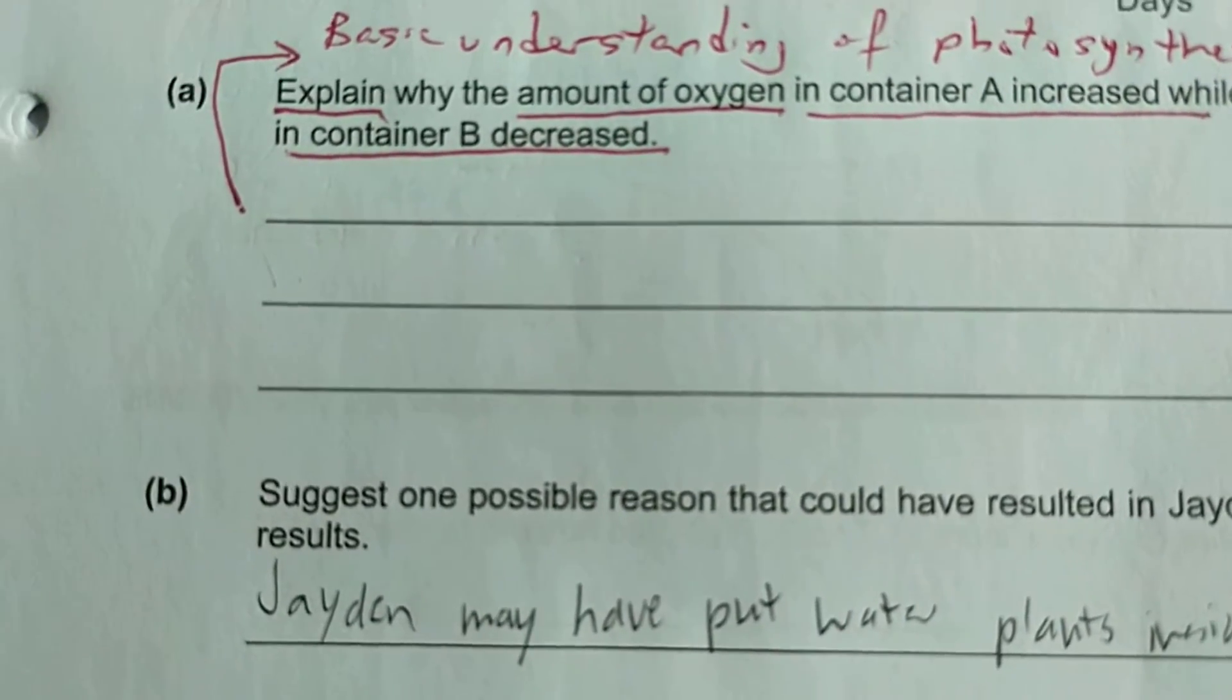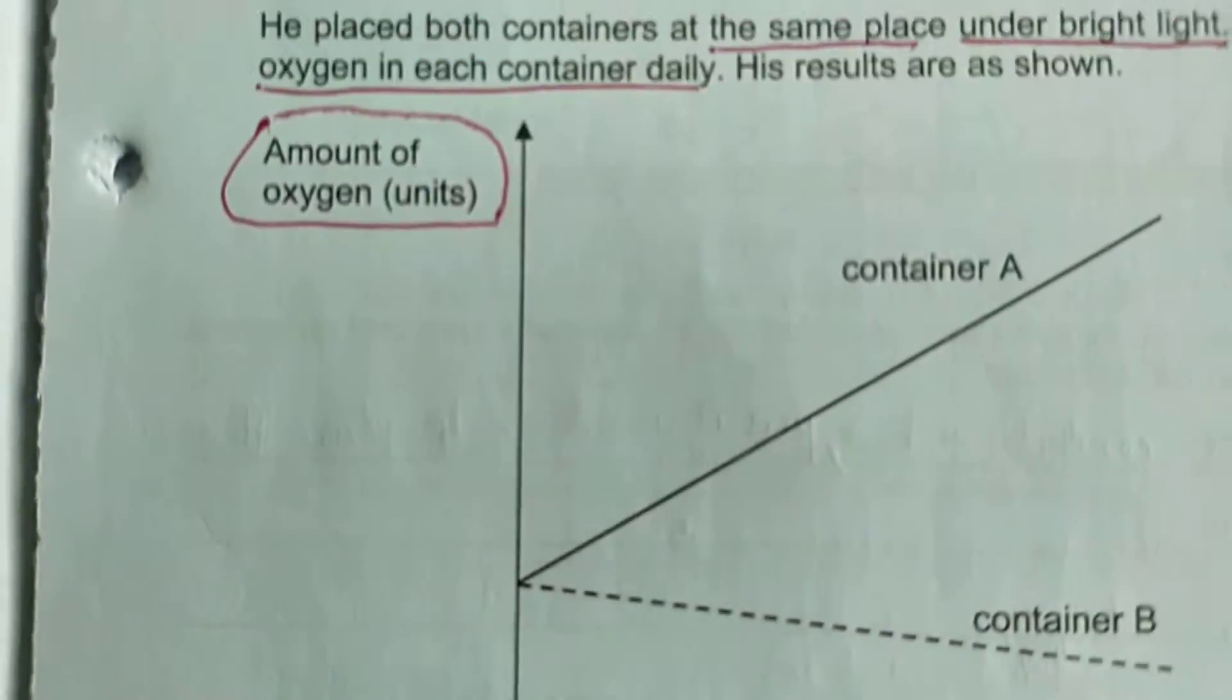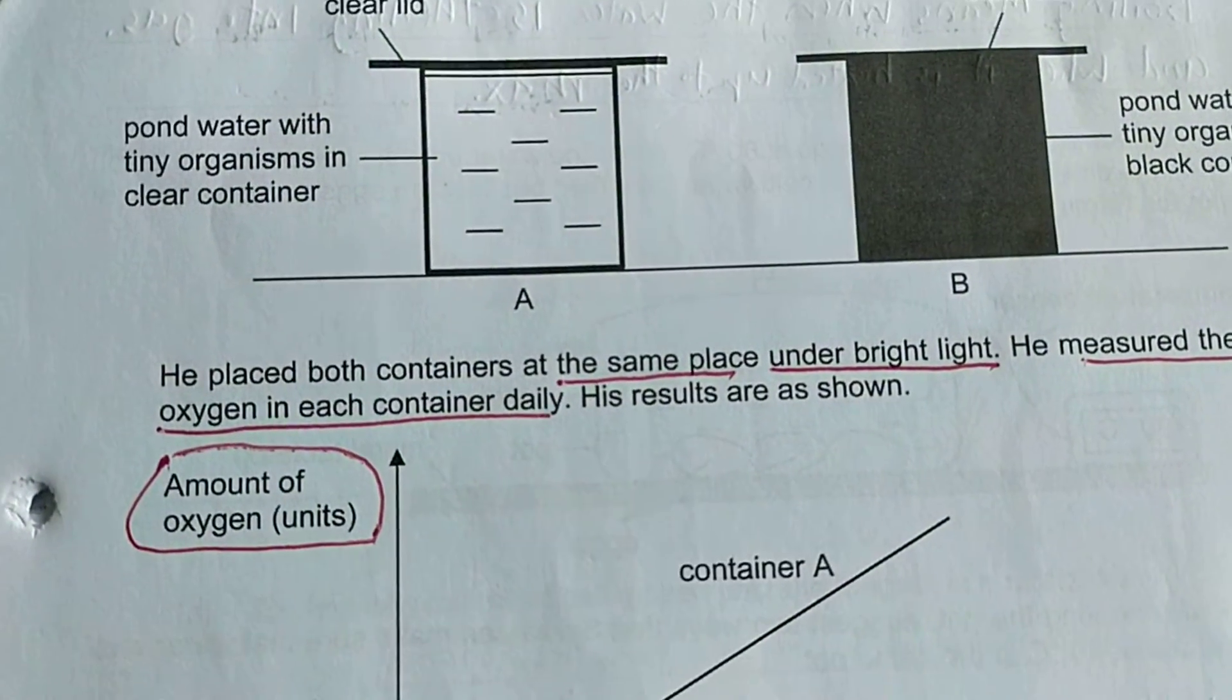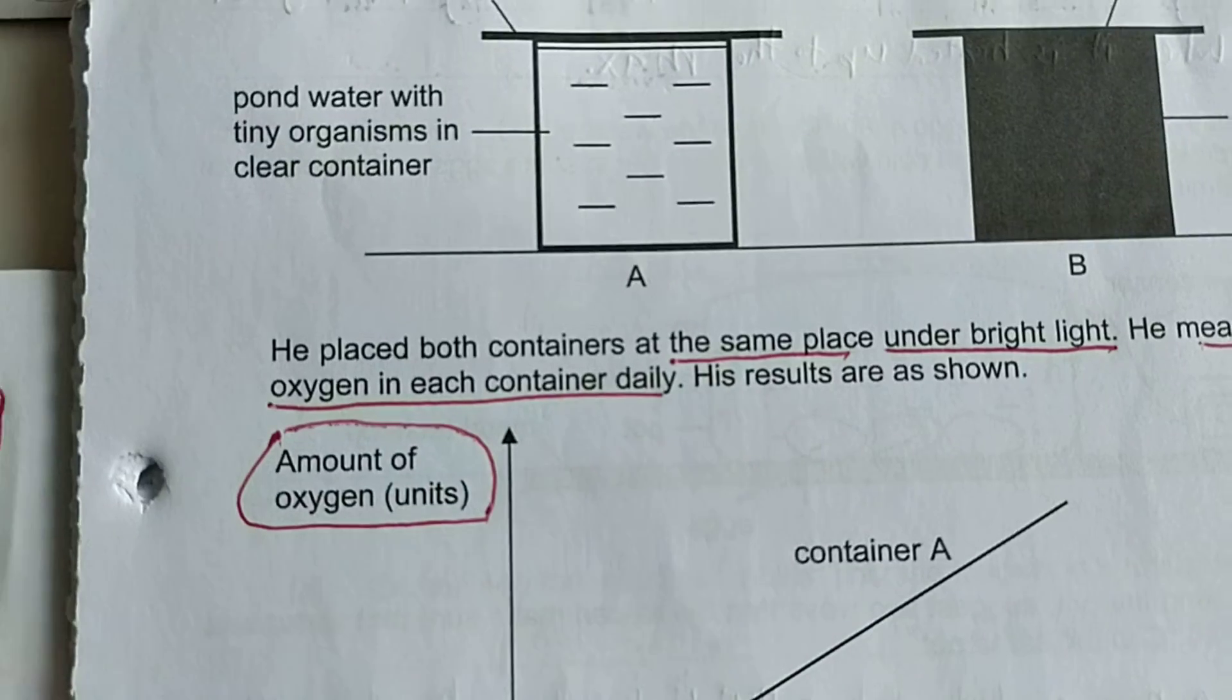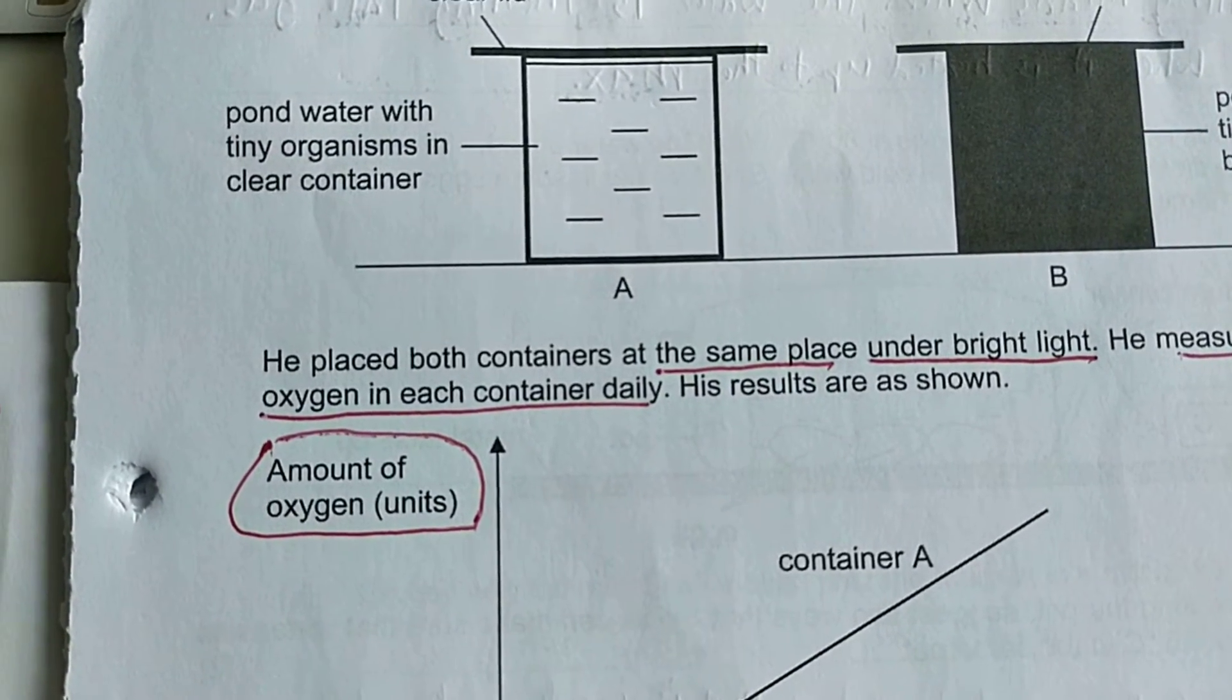In container B - I repeat, sorry - in container A, organism can receive light, therefore can photosynthesize and produce oxygen.